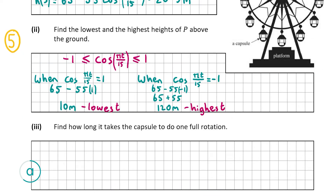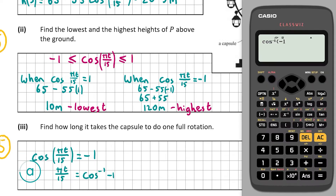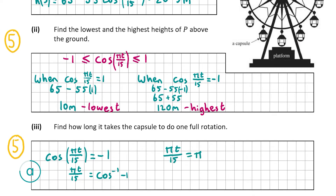For A part 3, also worth 5 marks, we find how long one full rotation takes. The maximum height of 120 meters occurs when cos(πT/15) = -1. Solving: πT/15 = cos⁻¹(-1) = π, so πT = 15π, giving T = 15 minutes to reach maximum height. Since the capsule must come back down the same distance, we multiply by 2: 15 × 2 = 30 minutes for a full rotation.